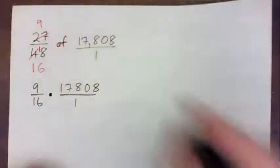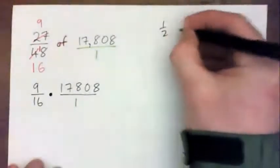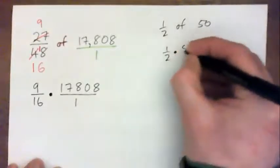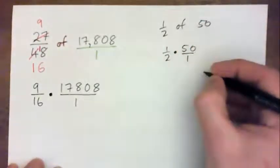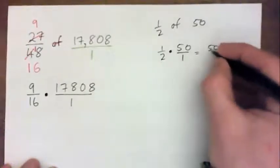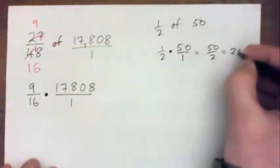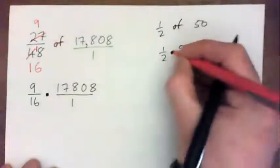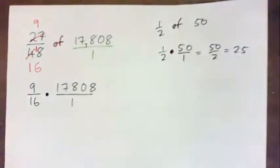And just a quick example. If you wanted to get 1/2 of 50, you would go 1 over 2 times 50 over 1. That's one way of doing it, which is 50 over 2, which is 25. So of. I'm just doing that quick example to show that of means multiply. Remember that?